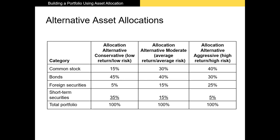Let's look at an example with several different alternative asset allocations. In a low-risk portfolio, you've got only 15% in common stock, 45% in bonds, a small portion in foreign securities — which are typically more risky than common stock — and over one-third in short-term securities such as T-bills, money market mutual funds, CDs, or commercial paper. These short-term assets are seen as least risky because there's no maturity premium and they're very unlikely to be defaulted upon.